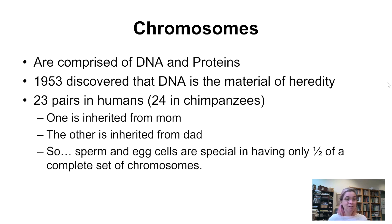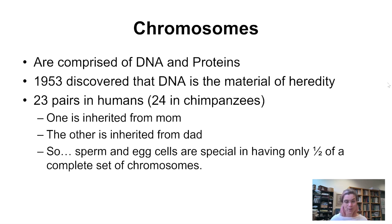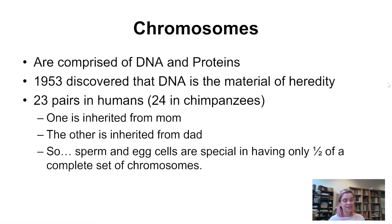Let's think for a moment about autosomal and sex chromosomes. You have 23 pairs of chromosomes in humans, and when an organism has two sets of chromosomes, that is called being diploid. Humans are generally diploid except in rare occasions. We get one copy from mom and the other copy from dad — meaning one set of chromosomes is inherited from mom and the other from dad. The sperm and egg cells are special in having only half a complete set of chromosomes — they are not diploid, they are what we call haploid.